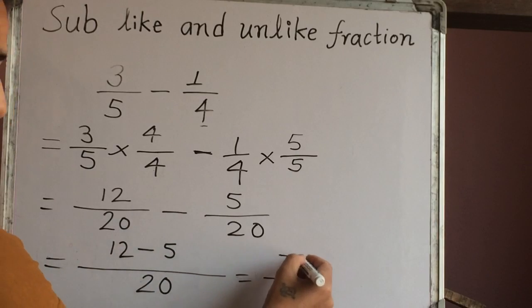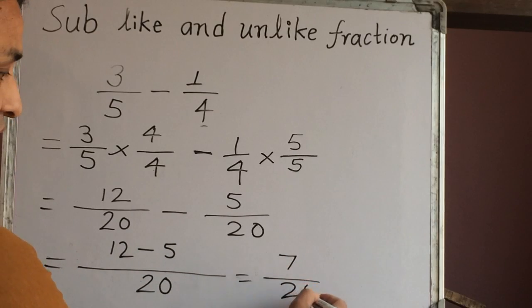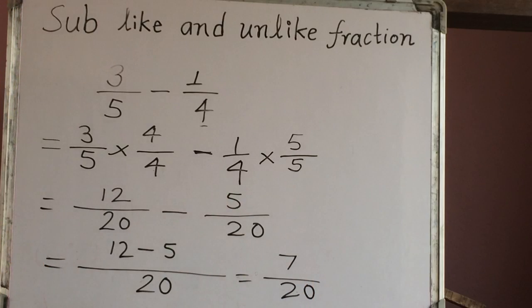12 minus 5 equals 7 out of 20. So the answer is 7 out of 20. Thank you for watching this video, everyone.